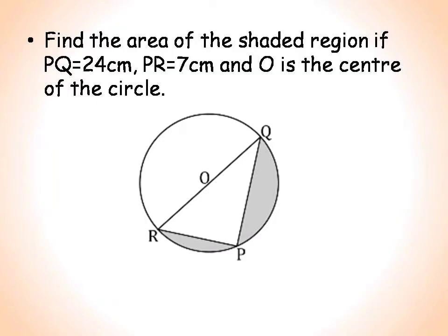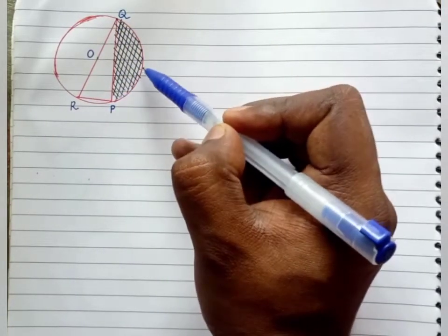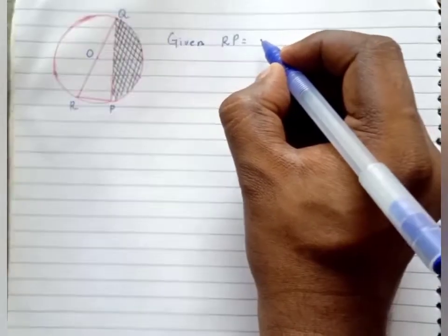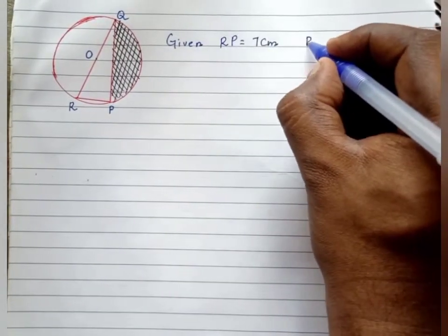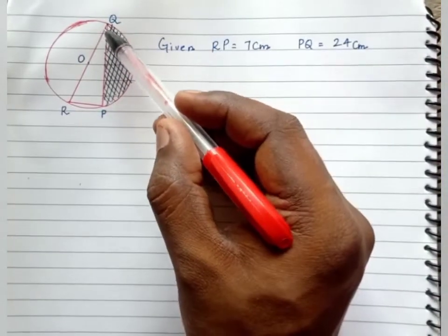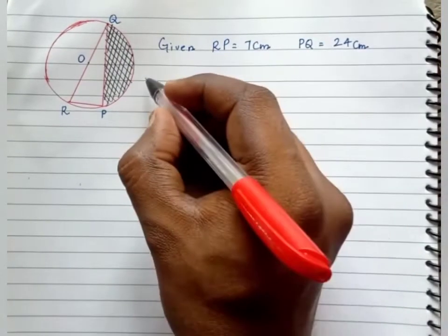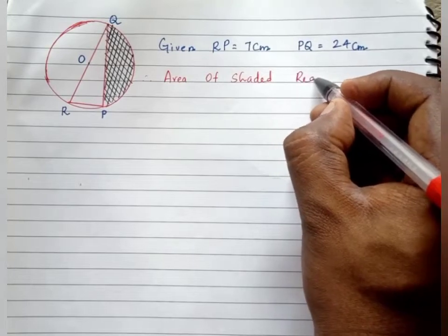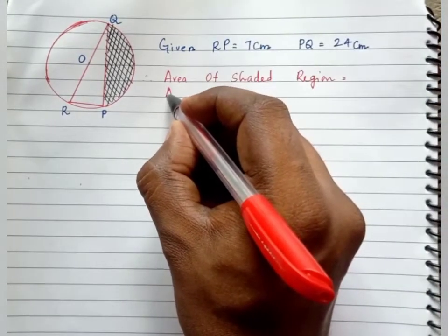Find the area of the shaded region if PQ equals 24 centimeter, PR equals 7 centimeter, and O is the center. RQ is the diameter. Since angle in a semicircle is always 90 degrees, angle P is 90 degrees. Analyzing the figure: the area of the shaded region equals area of semicircle minus area of triangle QPR.